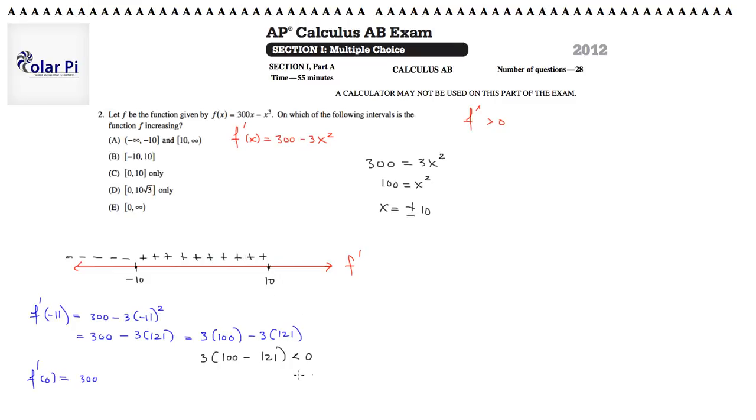And then, without much imagination, we know that if we plugged in positive 11, since f prime, not f, but f prime, is an even number, it will not discriminate between negative 11 and positive 11. Therefore, we should get that f prime of positive 11 is also less than 0, as was f prime of negative 11.